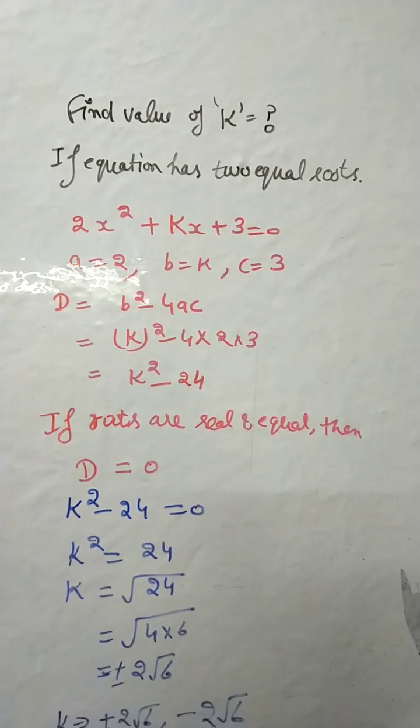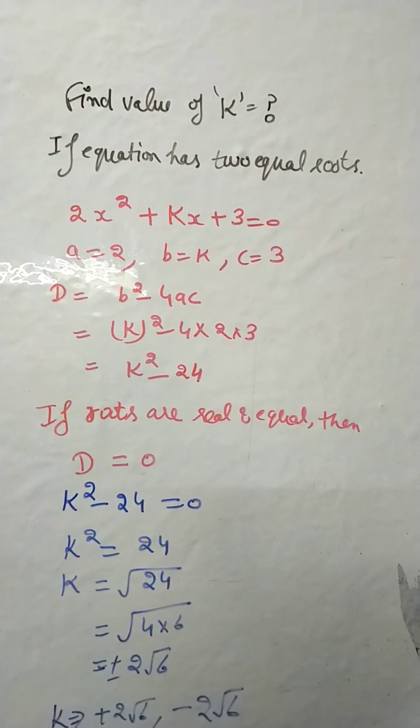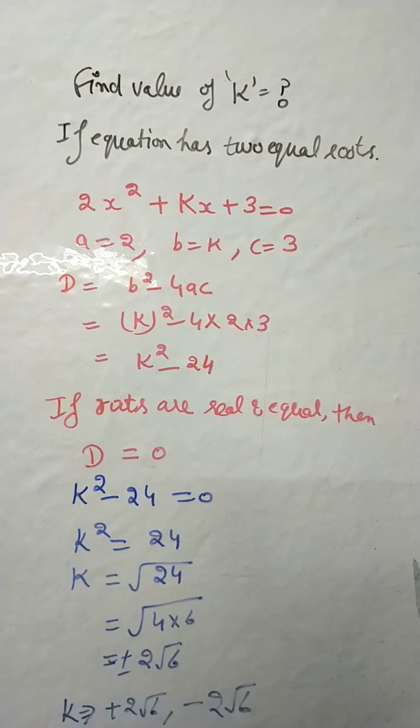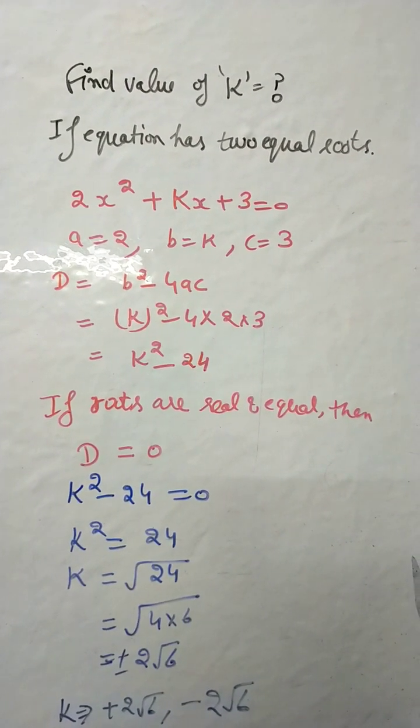Hello students, find the value of k if equation has two equal roots. The equation is 2x² + kx + 3 = 0.